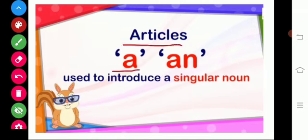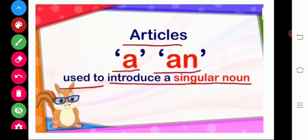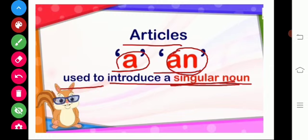Articles — A and AN are used to introduce a singular noun. Now tell me, what is meant by singular noun? If there is only one animal, one pen, one pencil, then that noun comes under singular noun. So A and AN are used to introduce a singular noun.